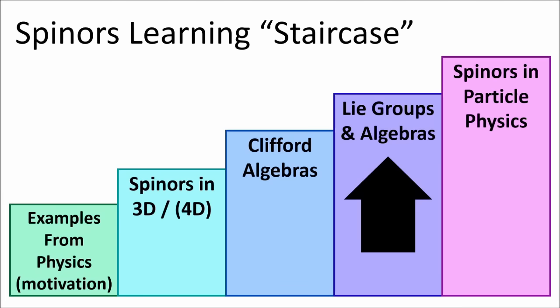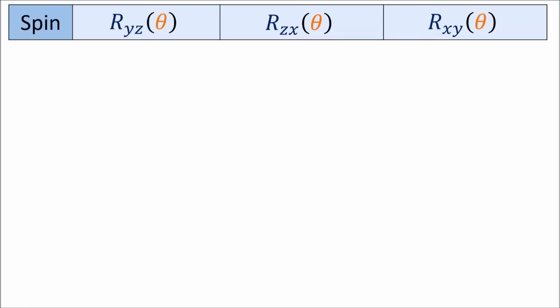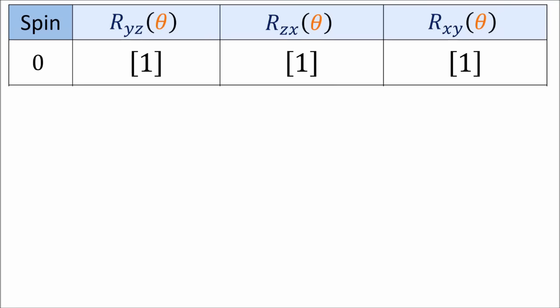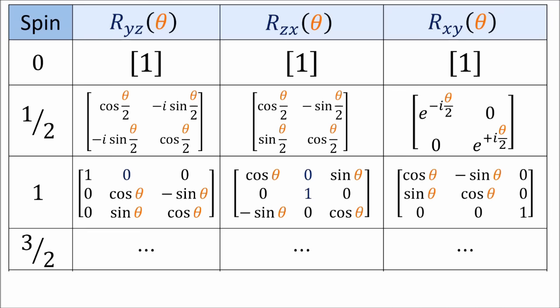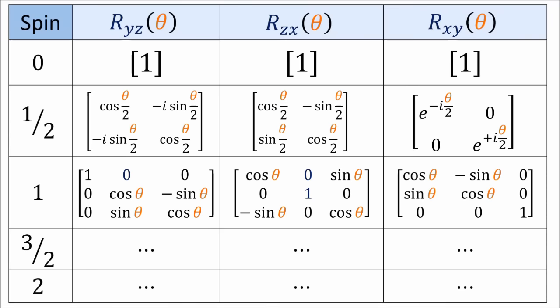We're continuing our discussion of Lie groups and Lie algebras. In the previous couple videos, we found the Lie group matrices for rotations of spin 0, spin 1 half, and spin 1 particles. In this video, we're going to come up with a general procedure for finding the Lie group matrices that rotate higher spin particles, such as spin 3 halves, spin 2, and all higher spin particles.